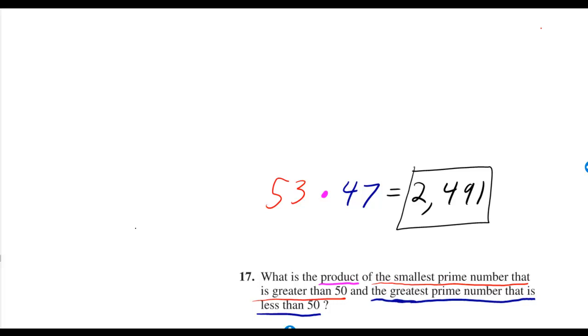Hey, what's up? So we got the product of the smallest prime number that is greater than 50 and the greatest prime number that is less than 50.